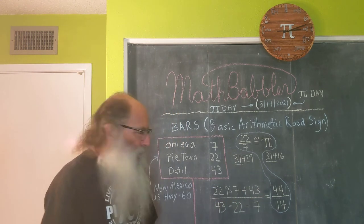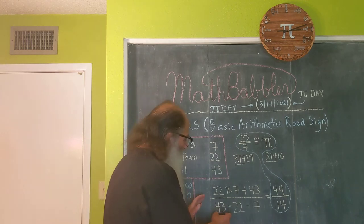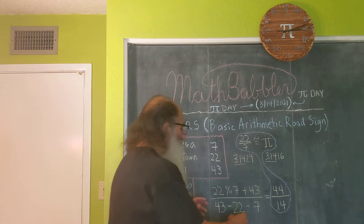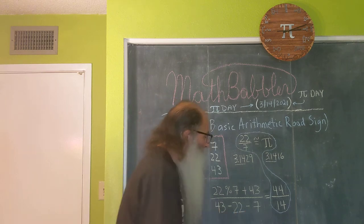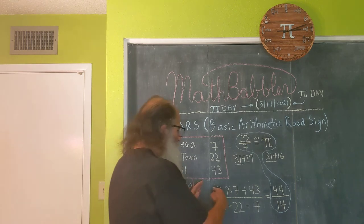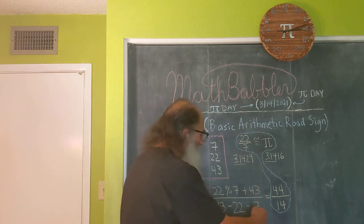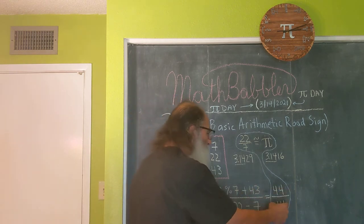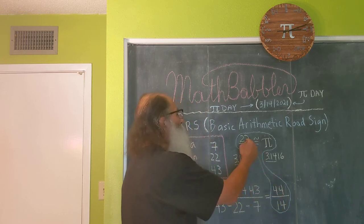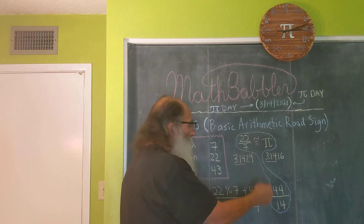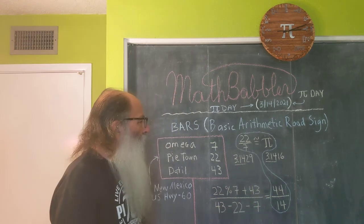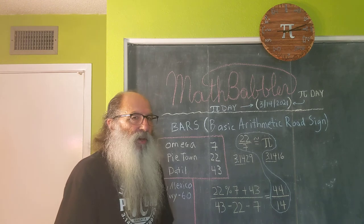Now let's do the bottom. If I take 43 subtract away 22, I get 21. 21 take away 7 is 14. So this expression divided by that expression gives us the fraction 44 over 14, which is equivalent to 22 over 7. And both of the fractions evaluate to 3.14 when rounded to the nearest hundredth.